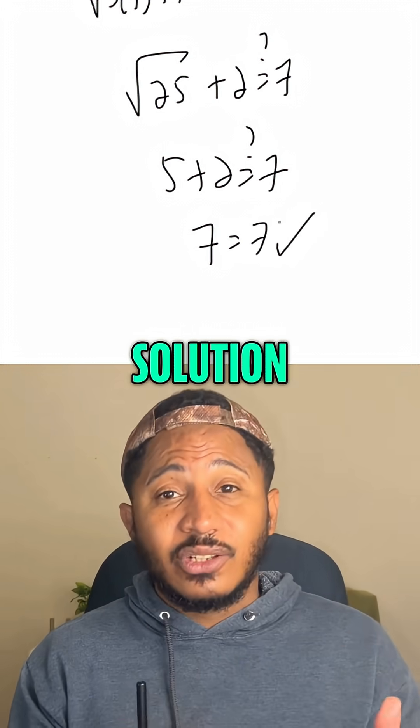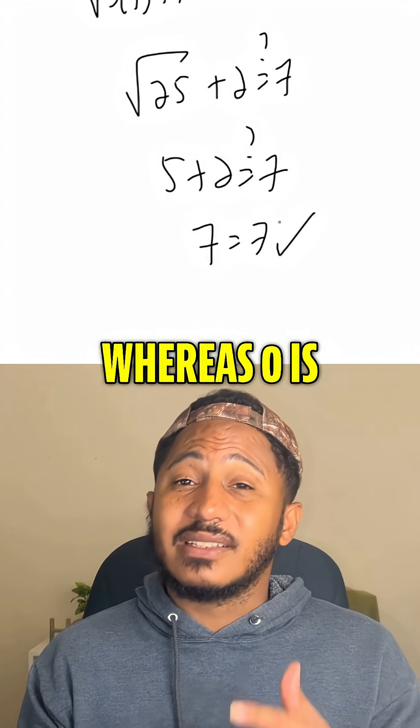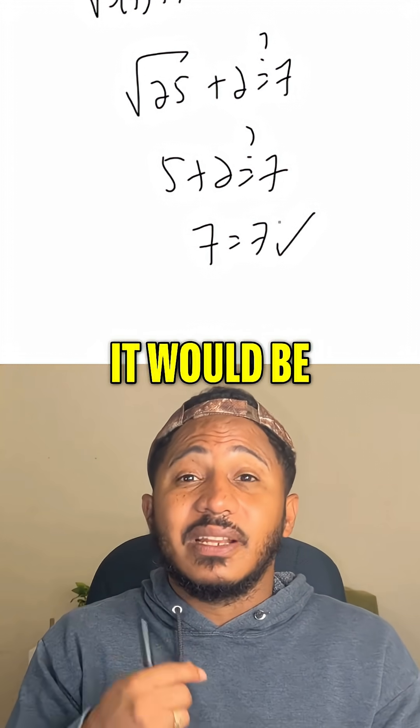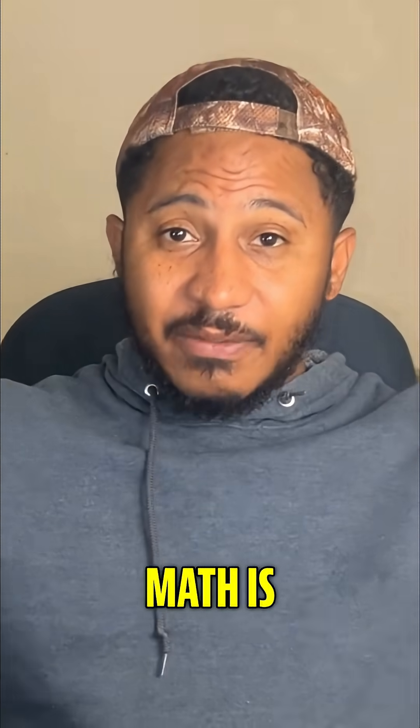So in other words, 7 is a solution to this equation, okay, whereas 0 is not a solution. In this case, it would be an extraneous solution. Always remember, math is everywhere.